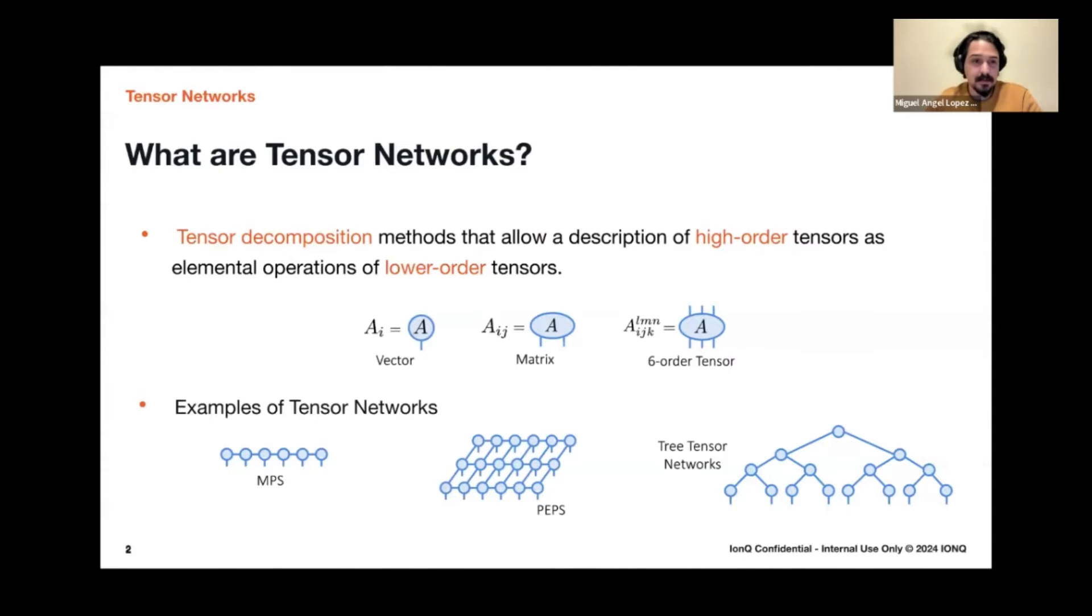So what are tensor networks? Well, we can call them as tensor decomposition methods that allows us to describe really high order tensors into simple operations of low order tensors. And by tensors, we just mean high dimensional arrays of numbers.